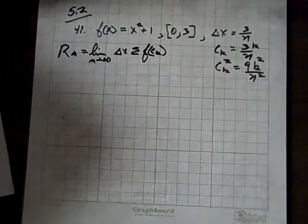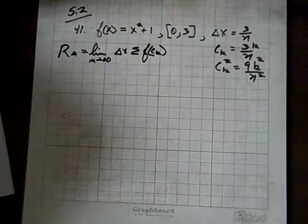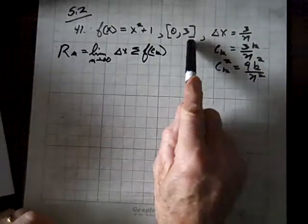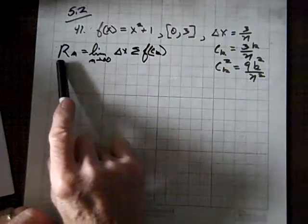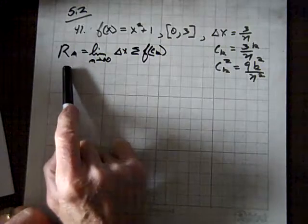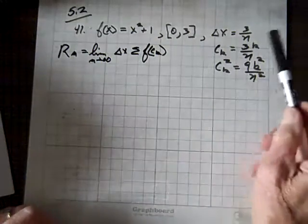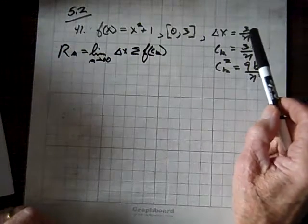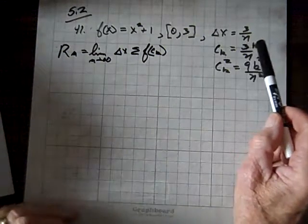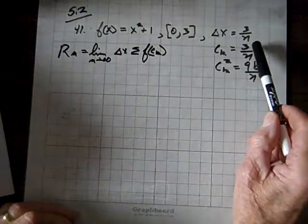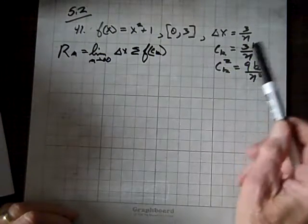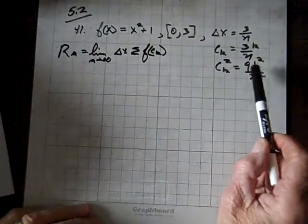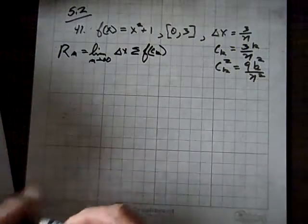Okay, now we're doing question 41, and we've got to find the area under this curve on the interval 0,3. We're going to come up with a Riemann sum using the right endpoint, and delta x is 3 over n, c sub k, we're using the right endpoint, will be 3 times k all over n, and we're going to have to square this, so c sub k squared is 9 k squared over n squared.